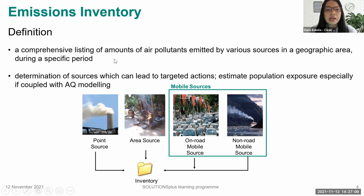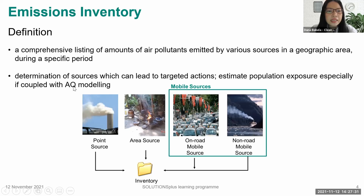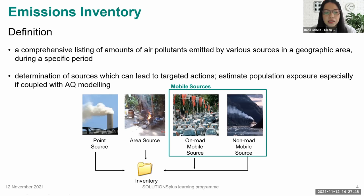The EI helps with the determination of sources which can lead to targeted action. From the EI, it gives us a list of where the pollutants are and which areas in the city have higher levels of specific pollutant emissions, so we can use this to have targeted actions. In the EI, the sources covered usually include point, area, and mobile sources, but for PASIC we only focus on mobile sources. The more sources we have or the higher the activity being observed, the higher the emissions will be.